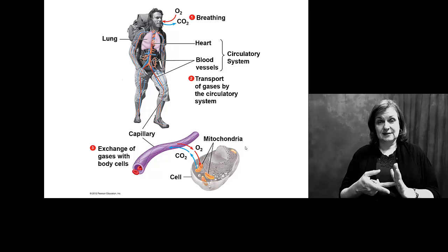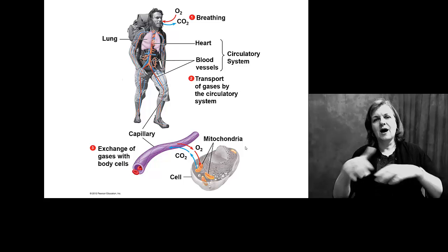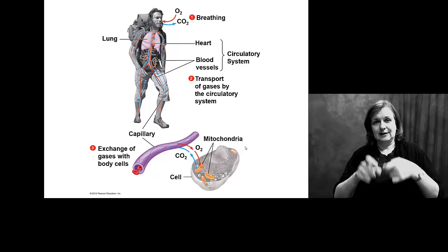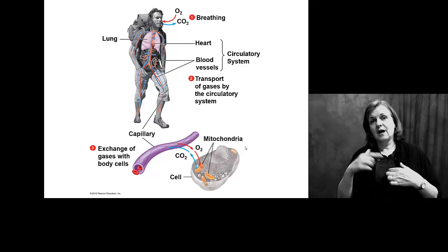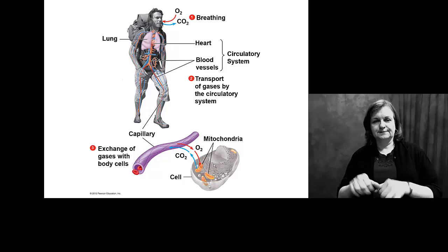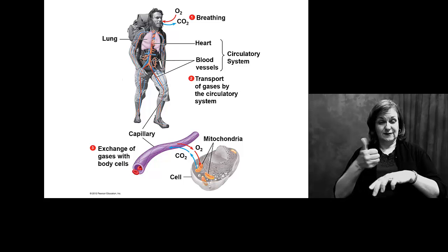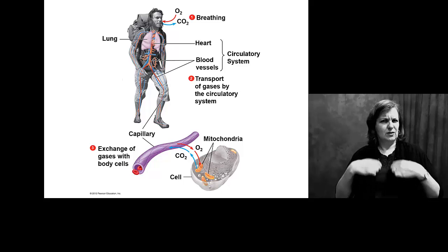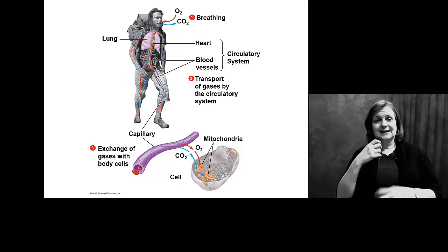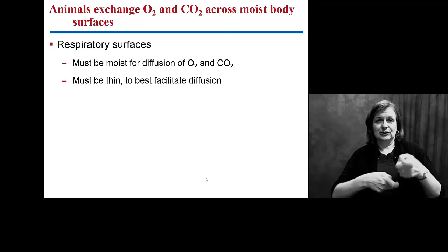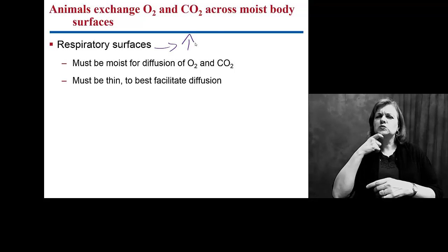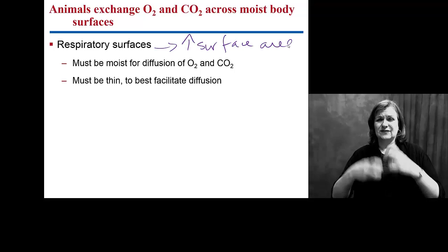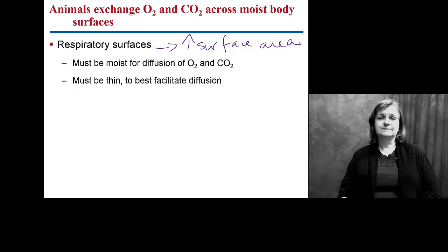All of the systems — the circulatory system and respiratory system — are going to have to work together. But independent of those systems, every single one of the mitochondria in every single one of your cells is demanding oxygen. We have to find ways to get it to each and every single mitochondria as efficiently as possible. This means having huge amounts of surface area in your respiratory surfaces — your lungs have a lot of surface area.